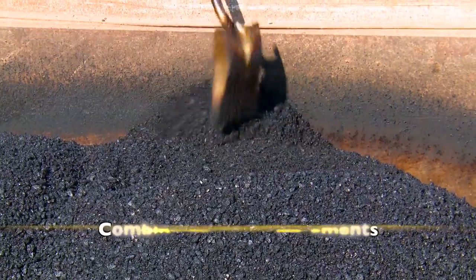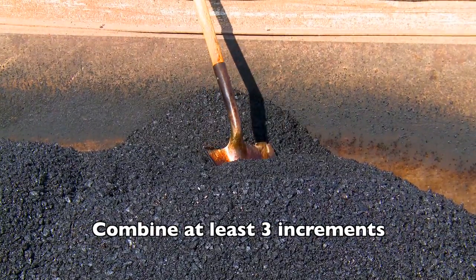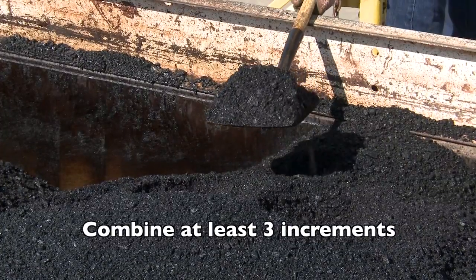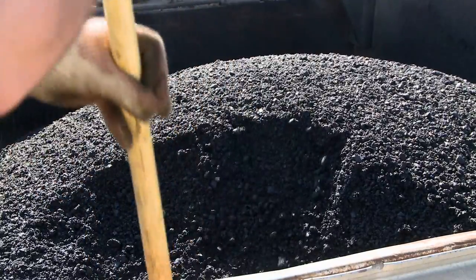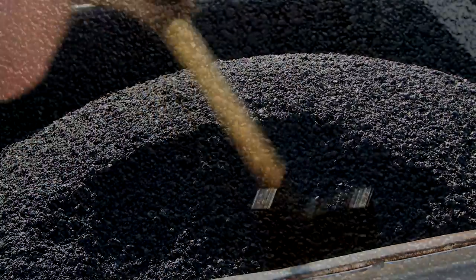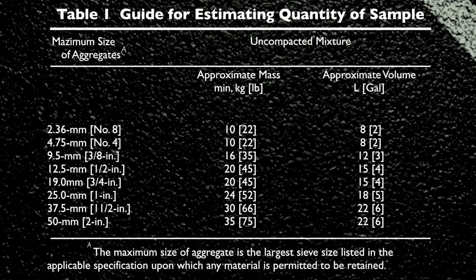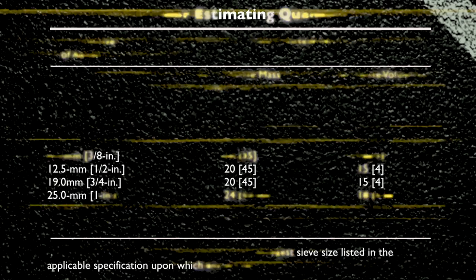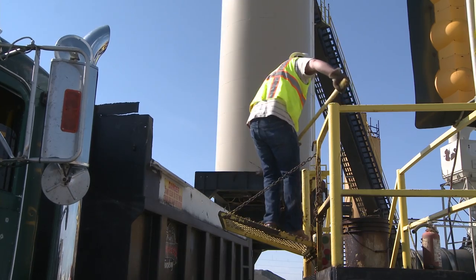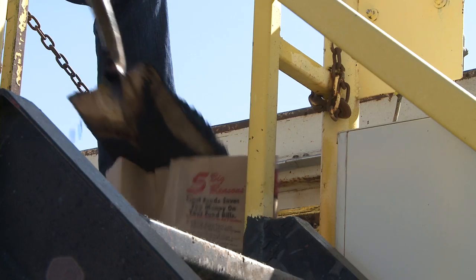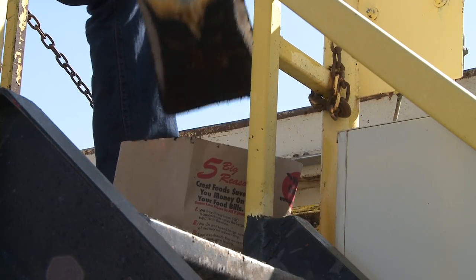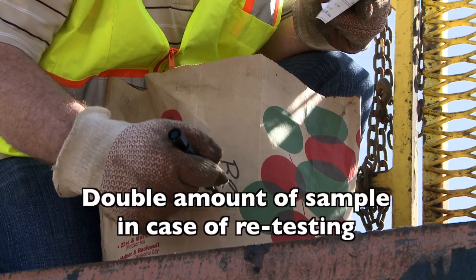Obtain at least three approximately equal increments from randomly selected locations. Remove the extreme top surface and obtain the increment using a shovel or scoop. The quantities listed in Table 1, Guide for Estimating Quantity of Sample, will not be sufficient for the full battery of tests routinely performed on bituminous paving mixtures. Make sure the quantity obtained meets or exceeds the minimum recommended for all anticipated tests, and when practical, double that amount to allow for the possibility of retests.